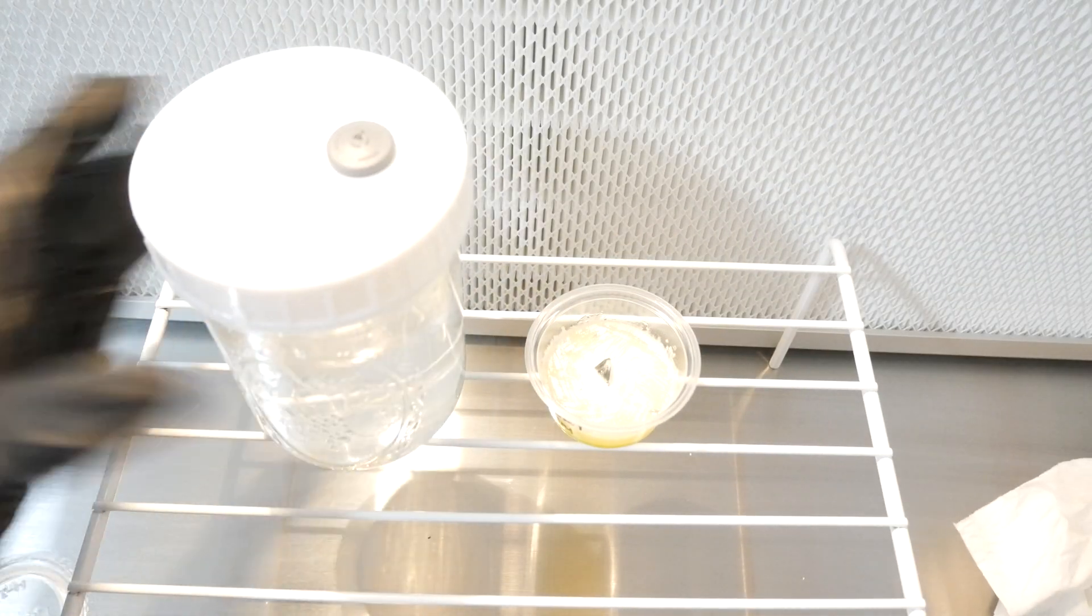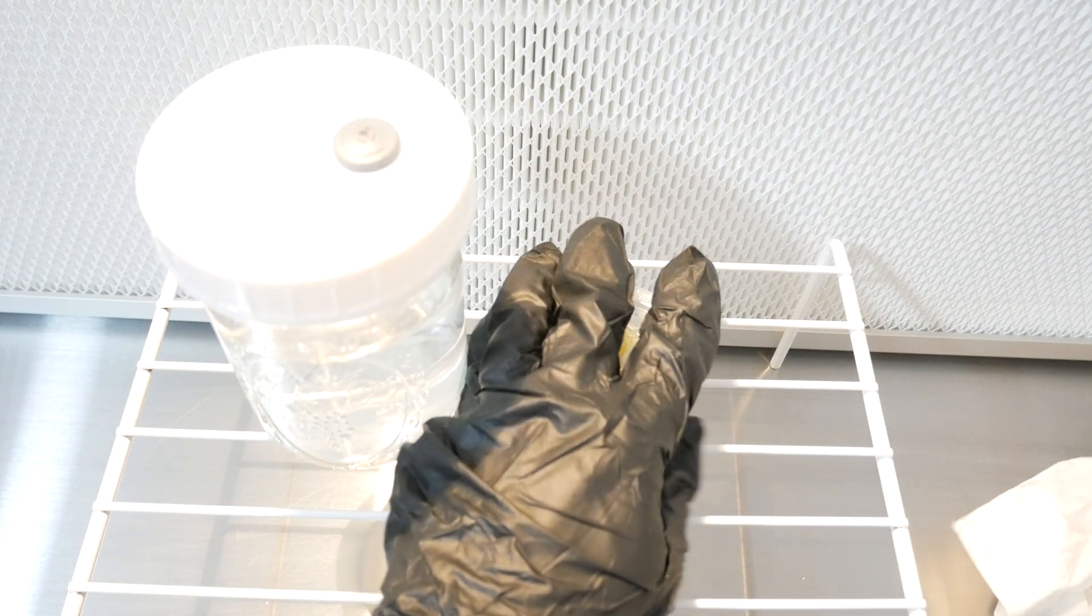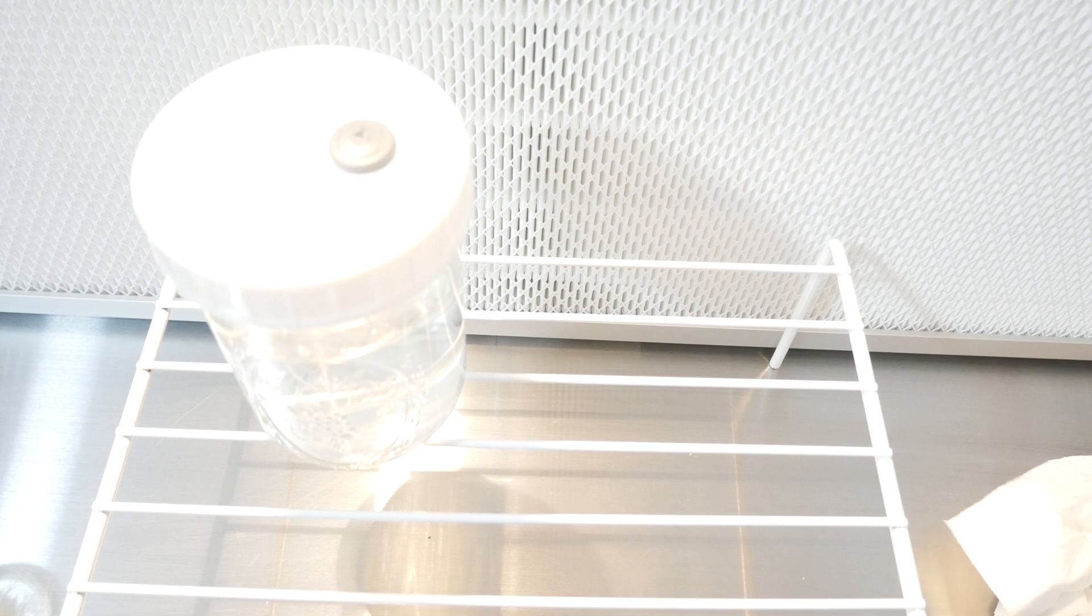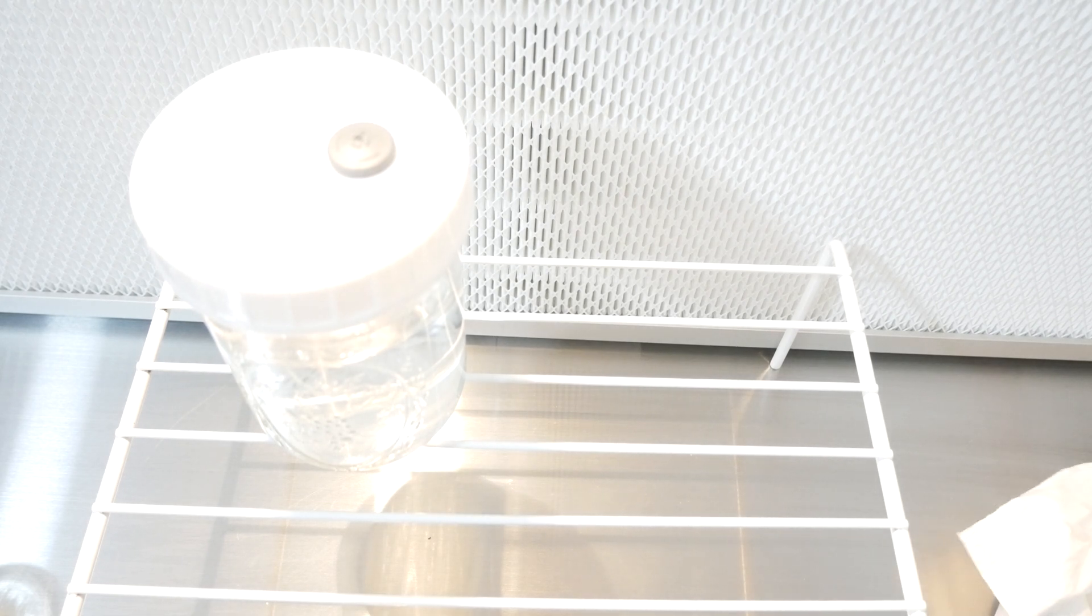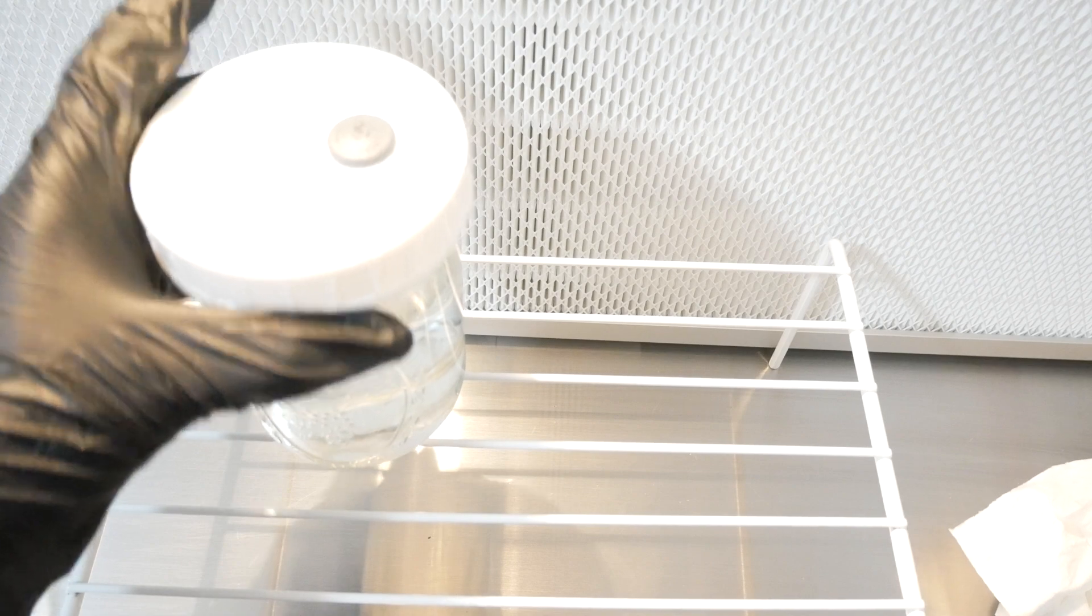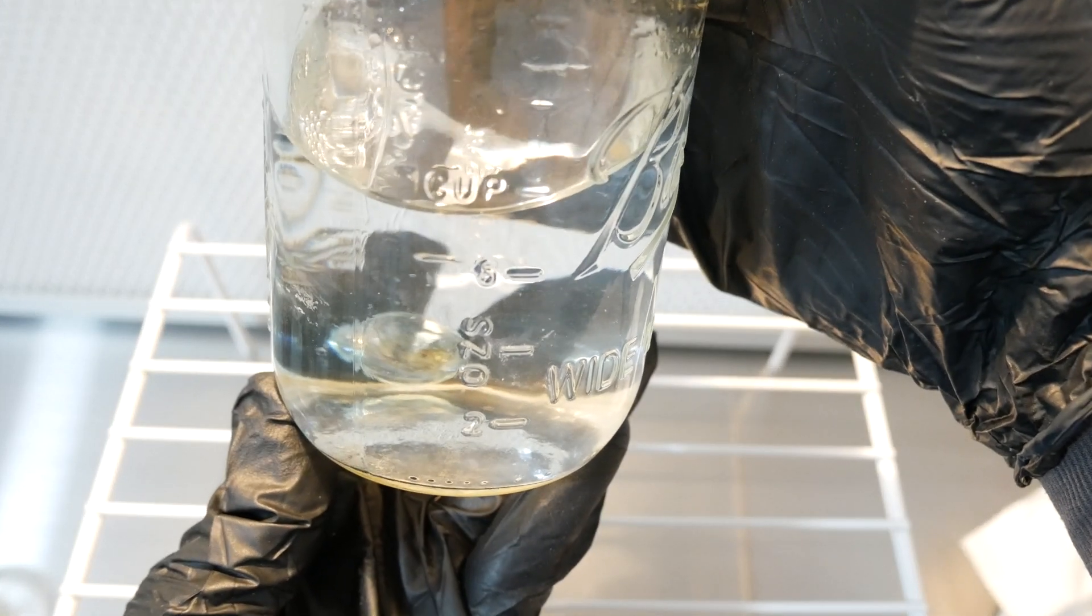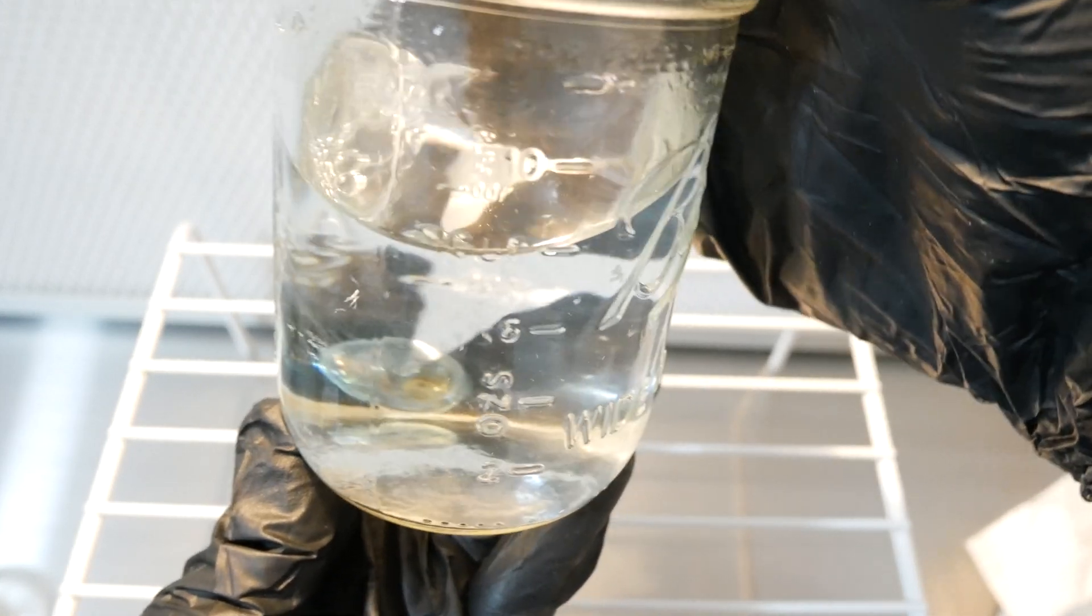So now that we have mycelium inside of the liquid culture solution, it's going to go ahead and colonize inside here and grow as it feeds off of the nutrients that's inside of the solution. After you have everything injected, you pretty much just want to go ahead and label your jars. I'm giving it a little quick swirl here just to kind of show you guys that there is mycelium inside of the jar here. And over time this mycelium is going to feed off of the nutrients that's inside of the liquid culture and it's going to grow and expand.